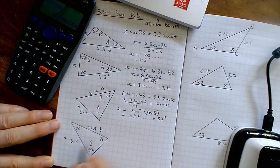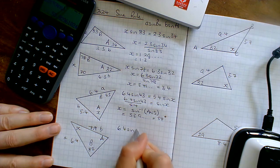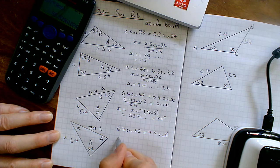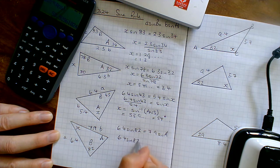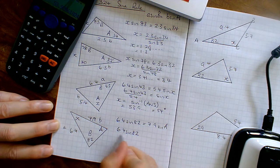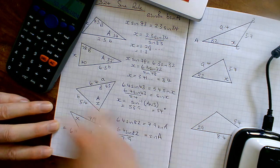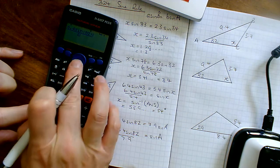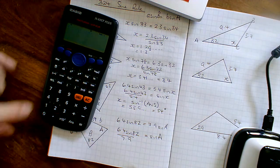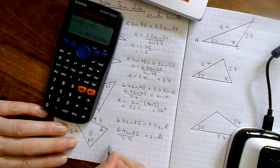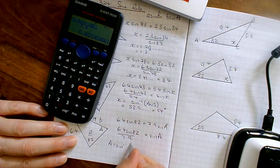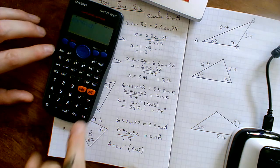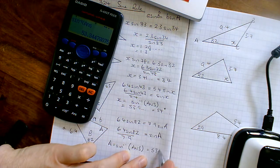So I've got now A is 6.4 sine 82 equals 7.9 sine of A. Drop the 7.9 on the bottom, 6.4 sine 82 divided by 7.9 equals sine A. Go for the calculator, and I've got the fraction 6.4 sine 82 all over 7.9. Press equals, so it's 0.8 something or other. So A is sine minus 1 to get rid of the sine bit of the last answer. Shift sine minus 1 of the answer, and I've got 53.3 something or other.